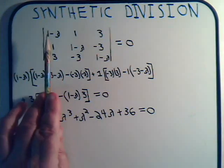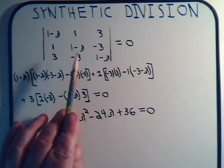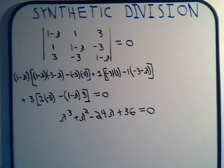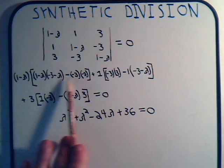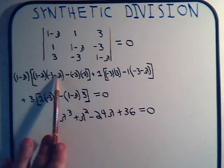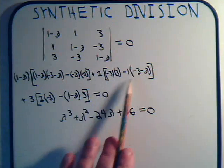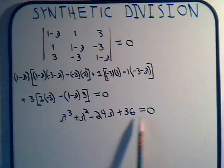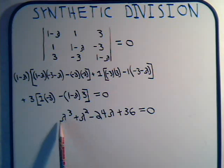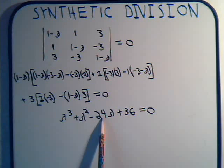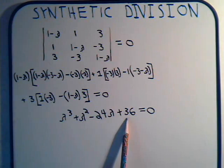We have this determinant here, and we want to know what values of lambda will make this determinant equal to zero. That means you have to multiply the whole thing out and expand it. Once that's done, multiply these here and then collect terms. Eventually, what you get is this cubic polynomial: lambda cubed plus lambda squared minus 24 lambda plus 36 equals zero.